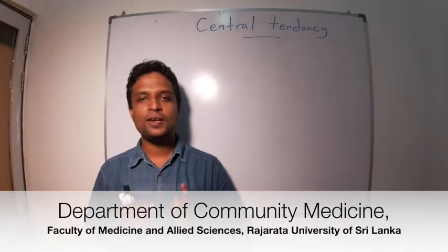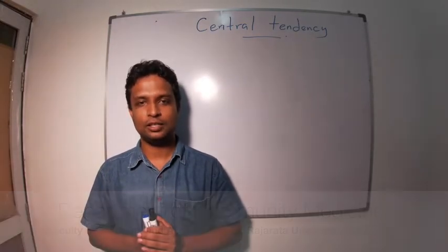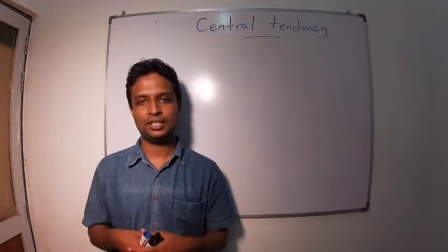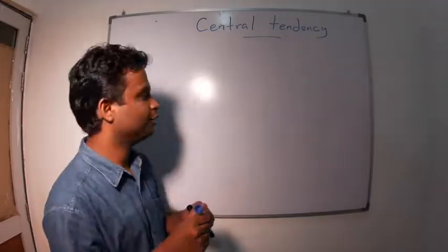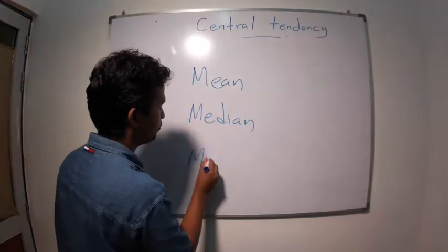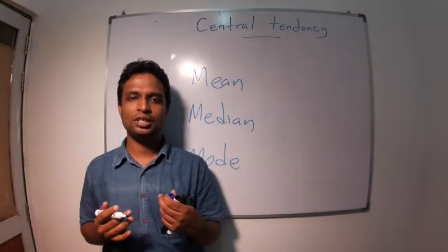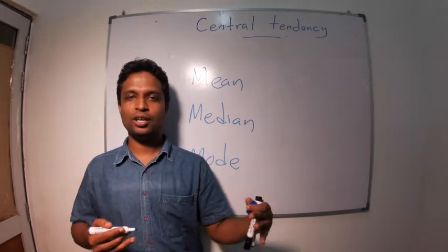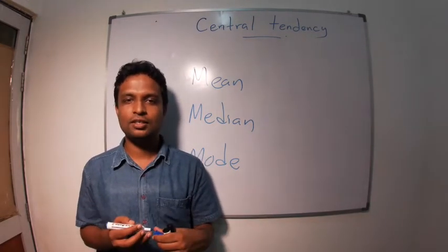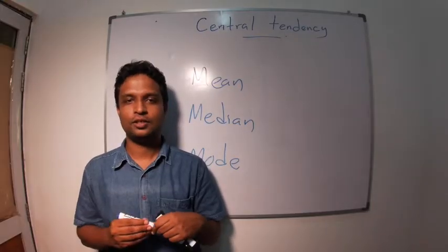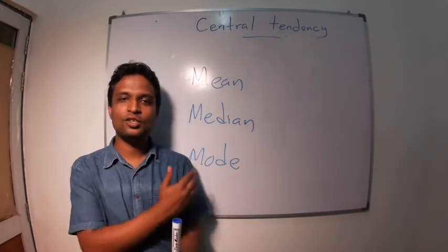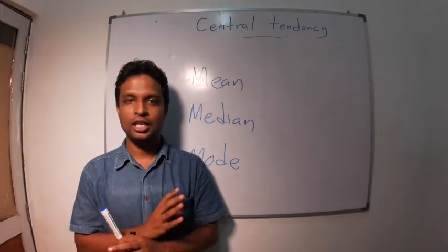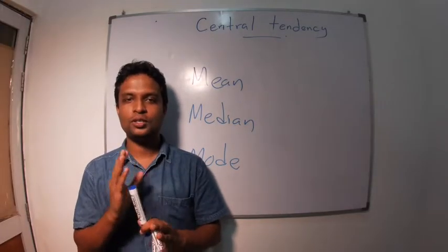Simply, there are three main measures of central tendency. You know this from your primary class mathematics: mean, median, and mode. You may wonder why are we discussing grade 4 or grade 5 mathematics in a statistics lecture series. Of course, calculation of these three is a simple task, but here we need to focus more on what are the applications of these three.